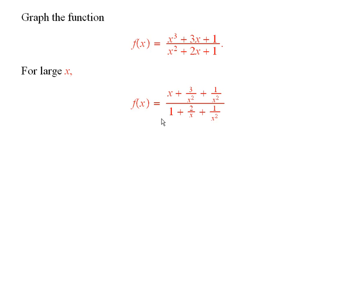And so the overall function is going to be getting very close to f of x equal to x. We call that an oblique asymptote because it is neither horizontal nor vertical. But the function is getting close to it as x gets large in absolute value.